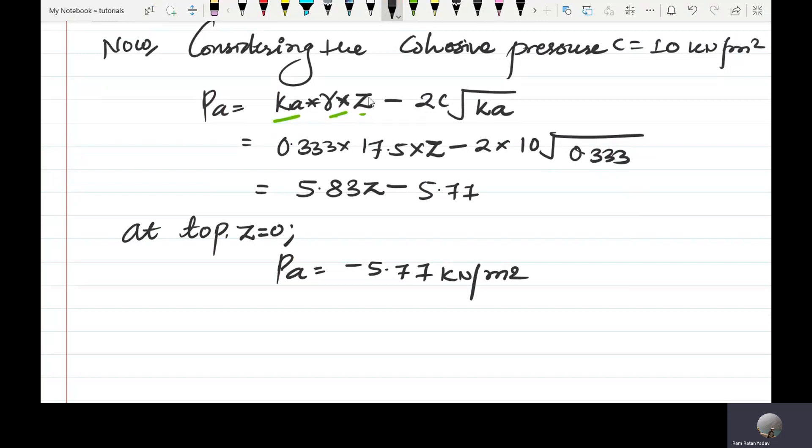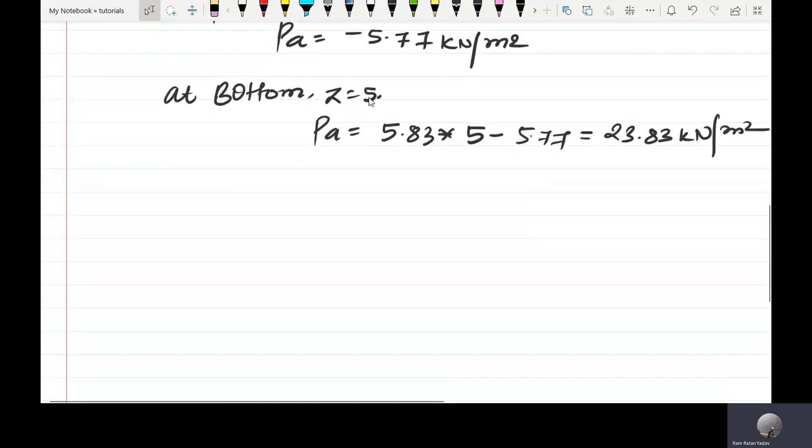At bottom, at the bottom where z equals 5 meters, this becomes 5.83 minus 5.77, which equals 23.83 kilonewton per meter square.